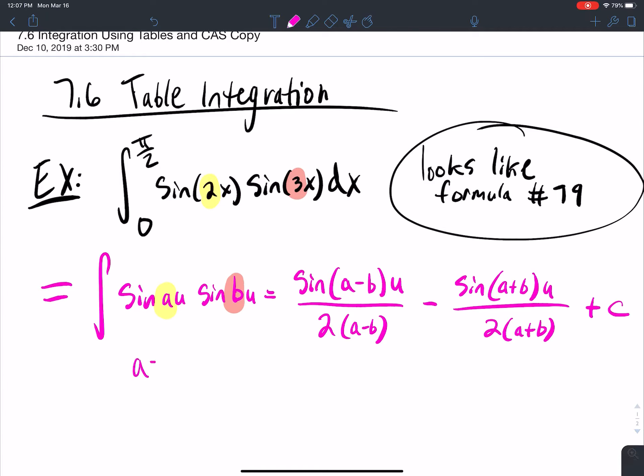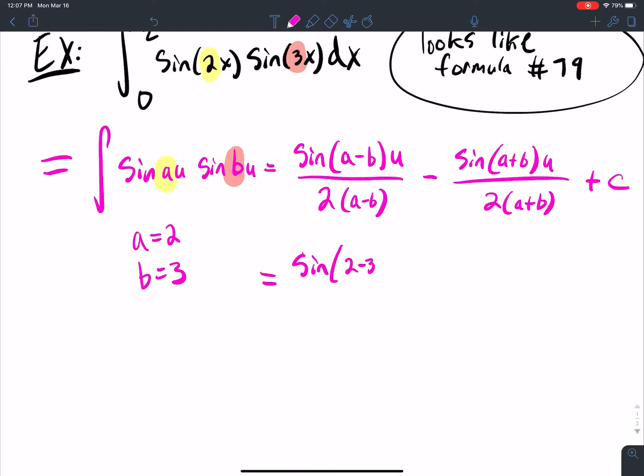So the integral here is going to be sine of two minus three U over two times two minus three, minus sine of two plus three U over two times two plus three plus C.